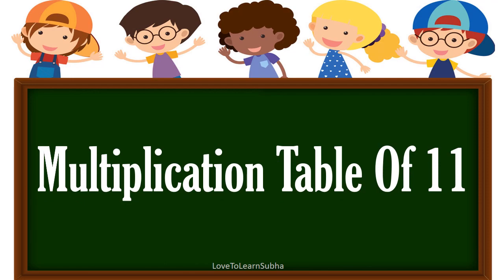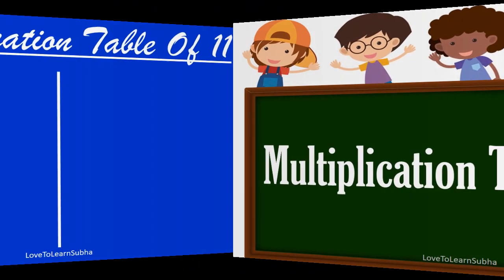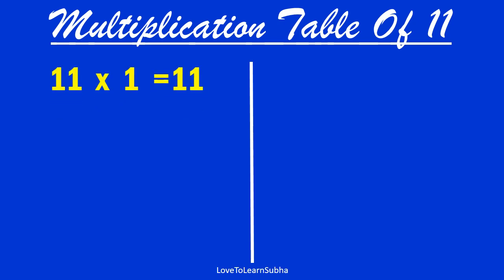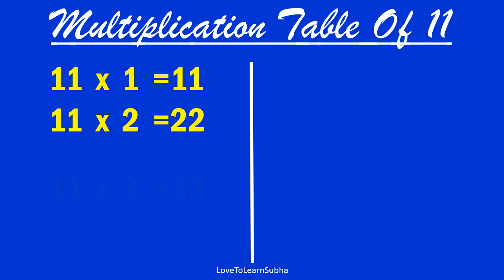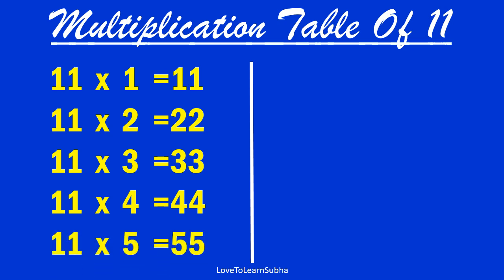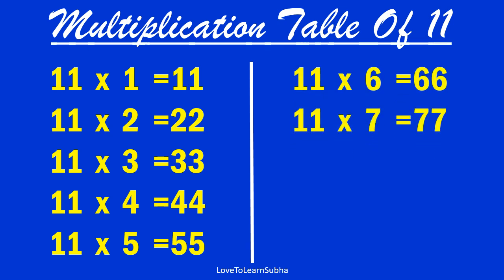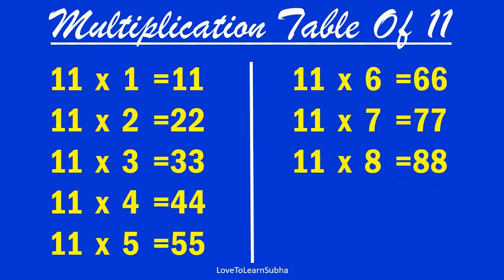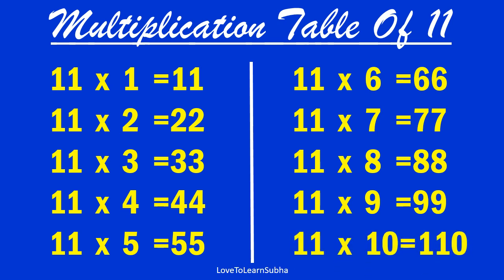Multiplication table of 11. 11×1 is 11, 11×2 is 22, 11×3 is 33, 11×4 is 44, 11×5 is 55, 11×6 is 66, 11×7 is 77, 11×8 is 88, 11×9 is 99, 11×10 is 110.